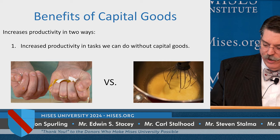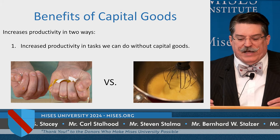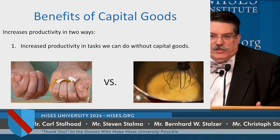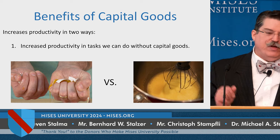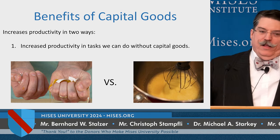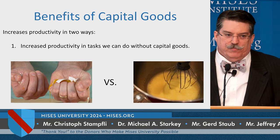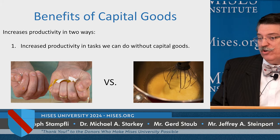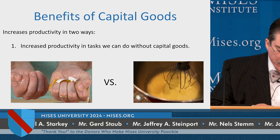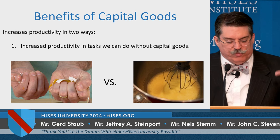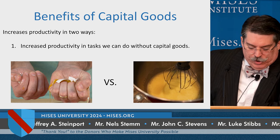People save and invest because capital goods are very beneficial to the production process. Capital goods increase our productivity in two ways. First, the use of capital goods increases the productivity in tasks we can do without capital goods. It is possible to beat eight eggs by hand, but it is a whole lot more productive to use a whisk, even more productive to use a hand-held mixer, and even more productive to use a standing mixer. Capital goods allow us to produce more output than we can of some goods without the use of capital goods.